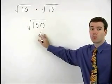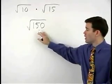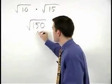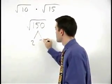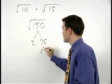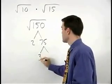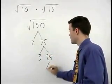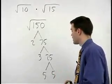Break down the square root that you end up with. 150 is 2 times 75. 75 is 3 times 25. And 25 is 5 times 5.